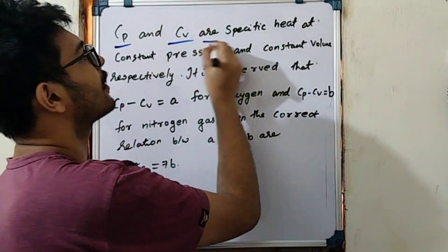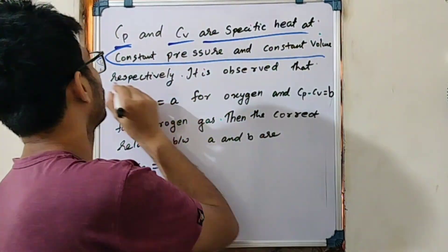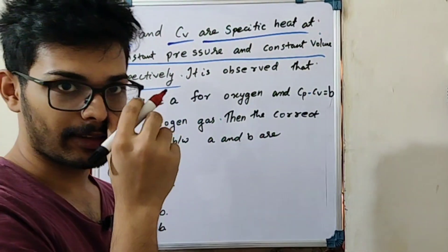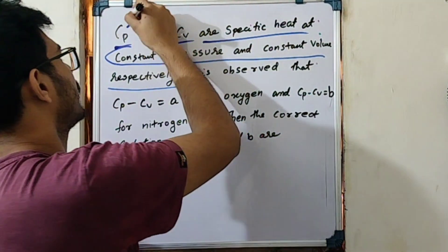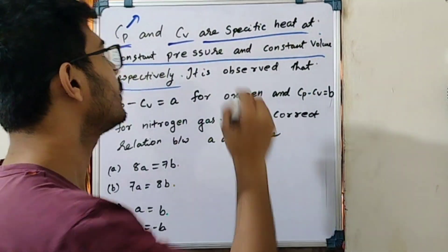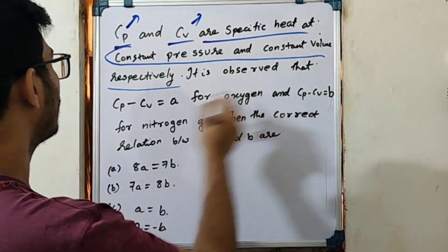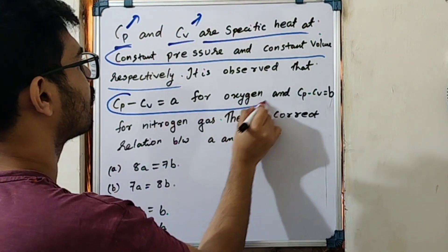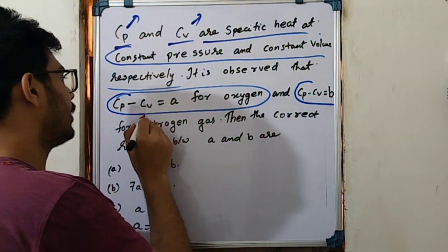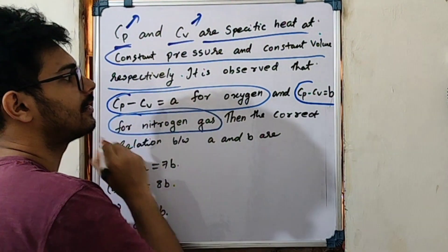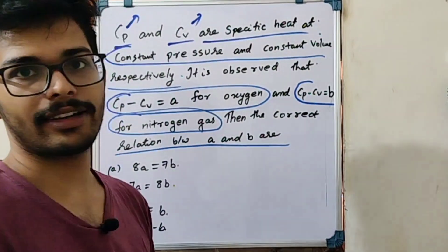CP and CV are specific heats at constant pressure and constant volume respectively. It is observed that CP minus CV is equal to A for oxygen, and CP minus CV is equal to B for nitrogen. What is the correct relation between A and B?